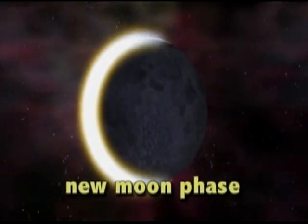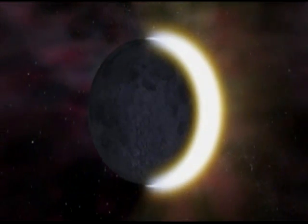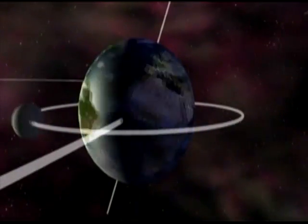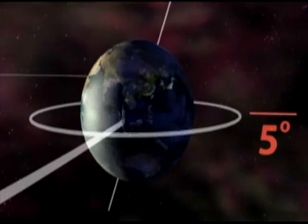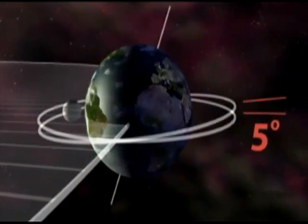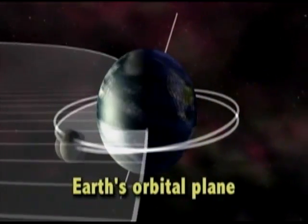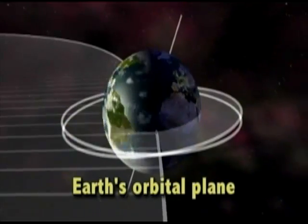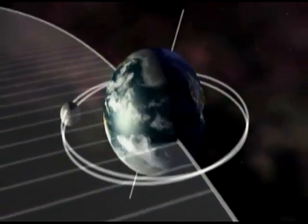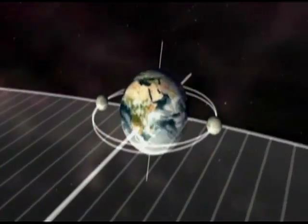An eclipse of the sun can only occur when the moon is new. However, not all new moons produce a solar eclipse. The moon's orbit around the Earth is tilted about five degrees to the plane of the Earth's orbit around the sun. As a result, the moon spends most of its time either above or below the Earth's orbital plane. The moon passes through the plane only twice during each of its orbits.